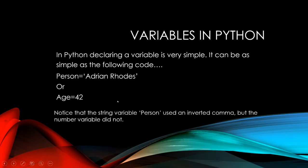So, variables in Python. In Python, declaring a variable is very simple. It can be as simple as the following code: person equals Adrian Rhodes, or age equals 42. What I want you to notice is that with person, the inverted commas around Adrian Rhodes shows that it is a string. And if you go for age and just go 42, it works out that that is a number, that is an integer. It works out that it hasn't got a .00, therefore it's an integer.